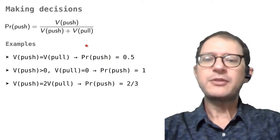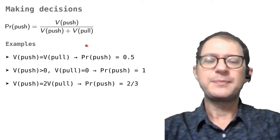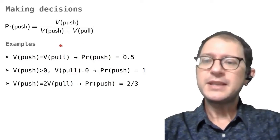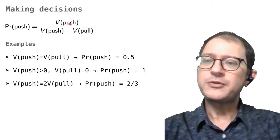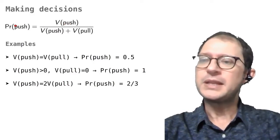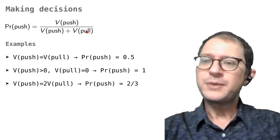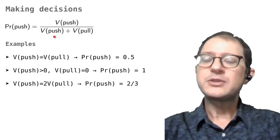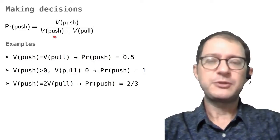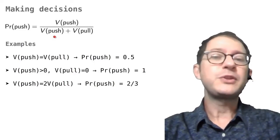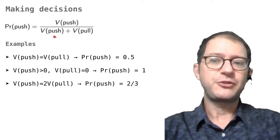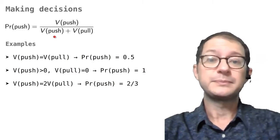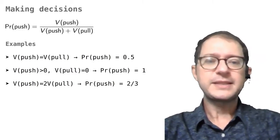What about when an action has a zero value and the other has a positive value? We expect the positive value action to be chosen. In this case, we get in fact that if V(push) is zero, then the probability of pushing is zero. But if V(pull) is zero, then you have two numbers that are equal here. So the probability is one or 100%. So between two actions, whichever one is zero is never chosen, and the other one, provided that its value is not zero, is chosen all the time.